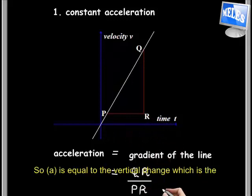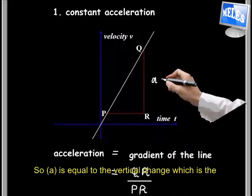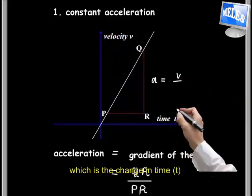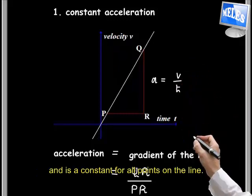So A is equal to the vertical change, which is the change in velocity V, over the horizontal change, which is the change in time T, and is a constant for all the points on the line.